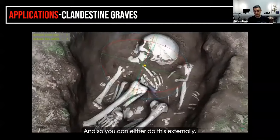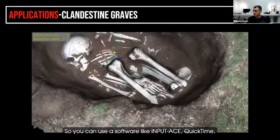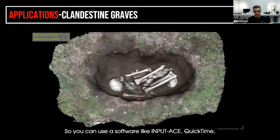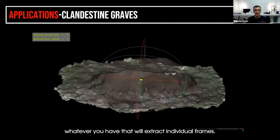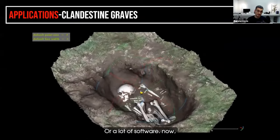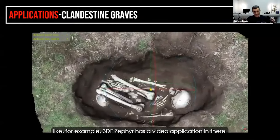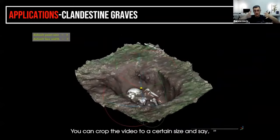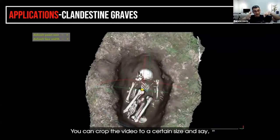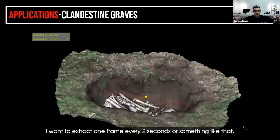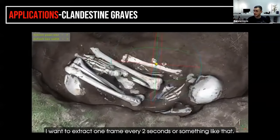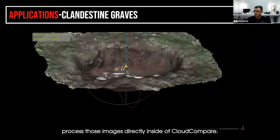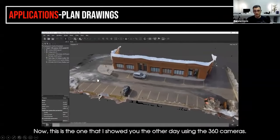You extract all the frames and then combine them in photogrammetry software. You can do this externally using software like InpuAce or QuickTime to extract individual frames, or a lot of software now — like 3DF Zephyr — has a video application built in. You just drag in the video, crop it, set it to extract one frame every two seconds or so, and then process those images directly inside the software.